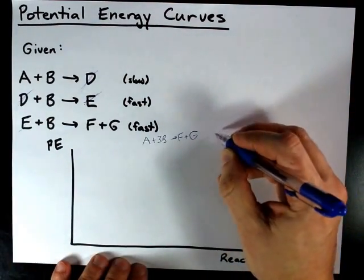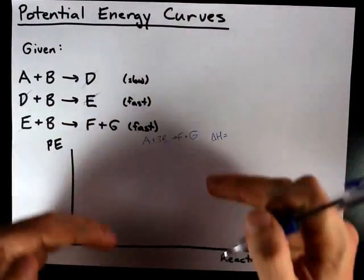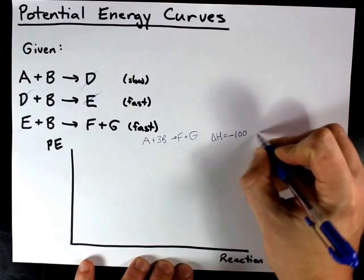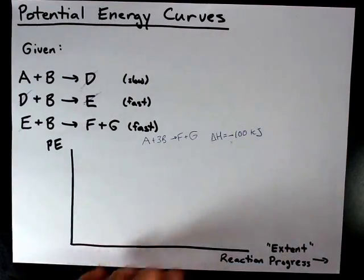Now, if I knew what the delta H was for that reaction, I could better predict where the reactants and products will land here. I'm going to invent one, and I'm going to say it's an exothermic reaction, a negative delta H,